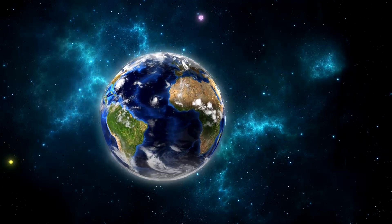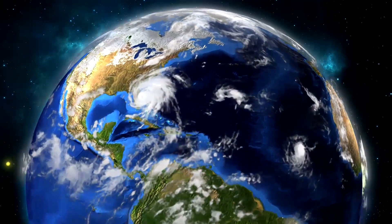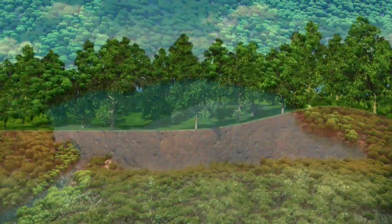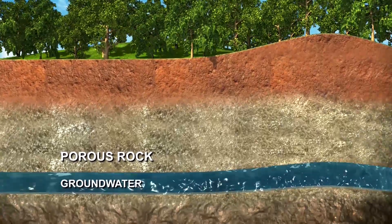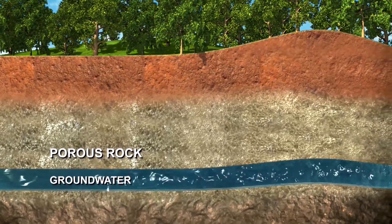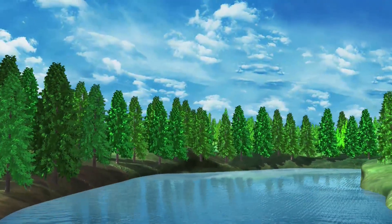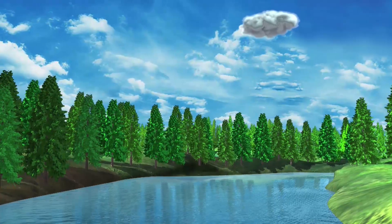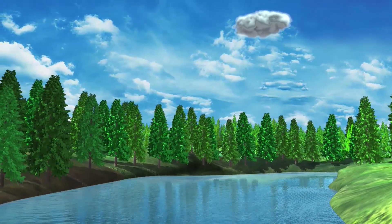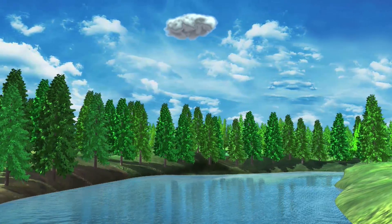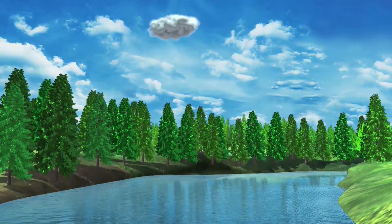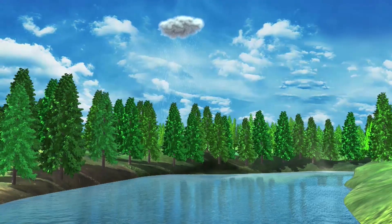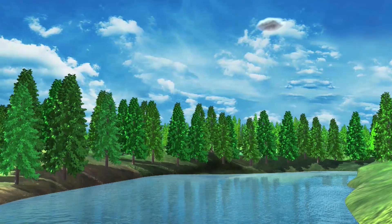Water covers most of our planet. It can be found in oceans, lakes, and ponds, and in the ground itself. Water is essential for our life on Earth. The cycle of water from liquid to vapor to solid is called the water cycle. It is an important scientific phenomenon that sustains the life cycle of plants and animals. As the water recycles, it is cleaned and made healthy for plants and animals. The water cycle is nature's way of distributing water to everyone and everything on Earth.